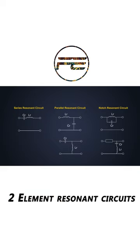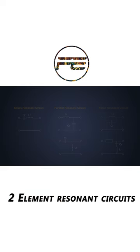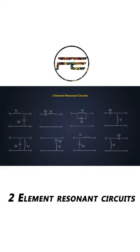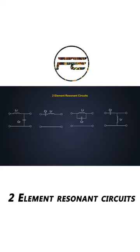There can be different types of resonant circuits. If you only take two-element resonant circuits, there are eight possibilities. And out of those, only these four are truly resonant circuits that can be used in resonant converters.